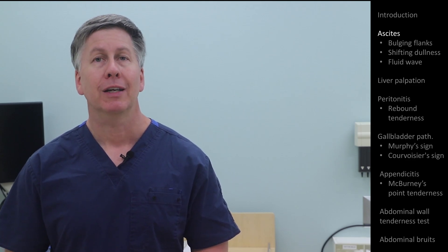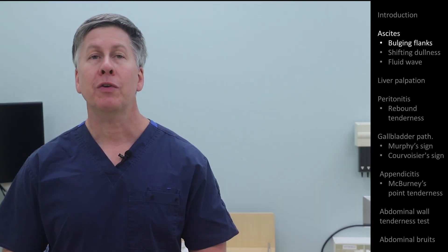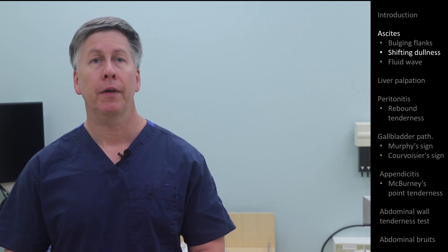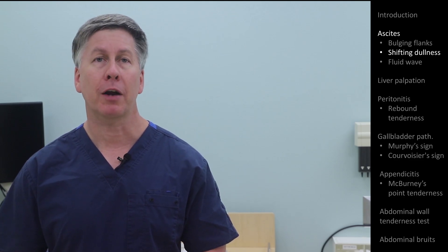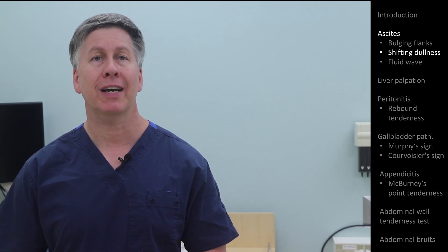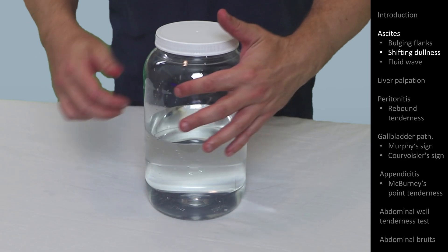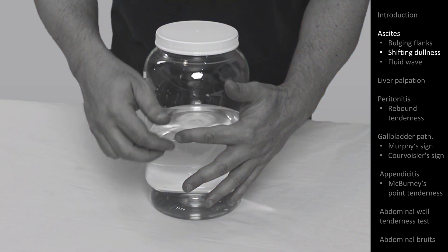The most basic is referred to as bulging flanks, seen on inspection, and which is self-explanatory. The next is called shifting dullness, which requires the skill of percussion — which consists of a firm tapping of the body with attention paid to the sound generated. Percussing over an air-filled structure such as the bowel generates a resonant sound, while percussing over fluid generates a sound that's dull.